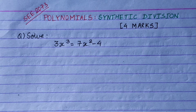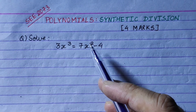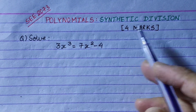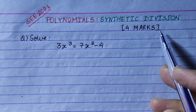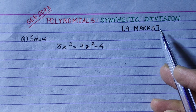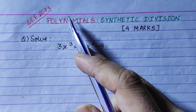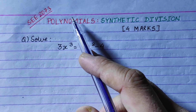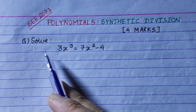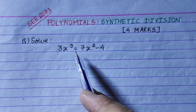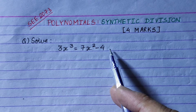Hi everyone. Today we will take 4 questions in the polynomial chapter of synthetic division. This is the AC2033 question. The question is: solve 3x³ = 7x² - 4.